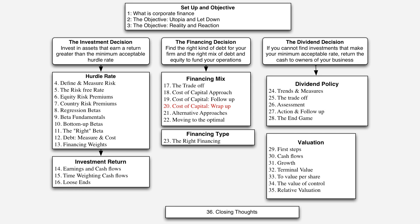In session 20 of a 36-session corporate finance class, I'd like to complete the discussion of the cost of capital approach to finding the optimal mix of debt and equity. After talking about how to extend this approach to commodity companies, private businesses, and emerging market companies, I'd like to discuss the determinants of that optimal mix and why it might vary across different businesses.